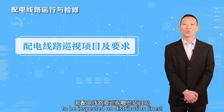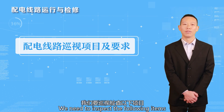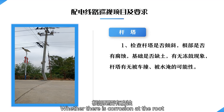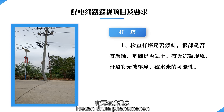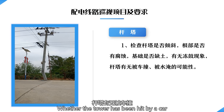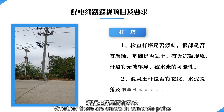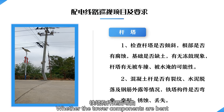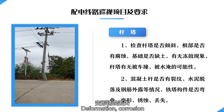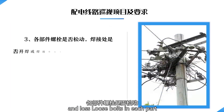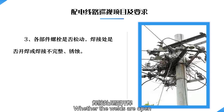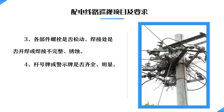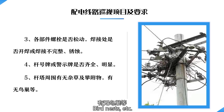Inspection items for distribution lines include: checking whether the tower is tilted, whether there is corrosion at the roots, whether the foundation lacks soil, frozen drum phenomena, whether the tower has been hit by a car, possibility of flooding, whether there are cracks in concrete poles, cement peeling off and steel reinforcement exposed. Also check whether tower components are bent, deformed, or corroded, whether bolts are loose, whether welds are open or incomplete. Check whether number plates and warning signs are complete and obvious, and whether there are weeds, climbers, or bird nests around the pole tower.